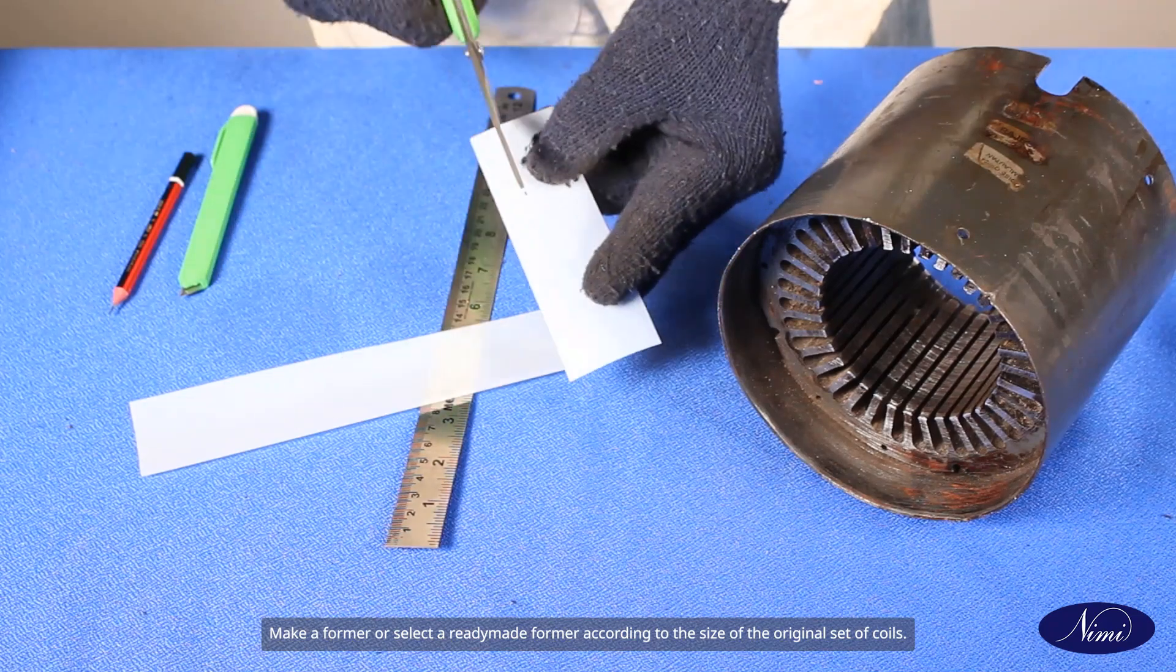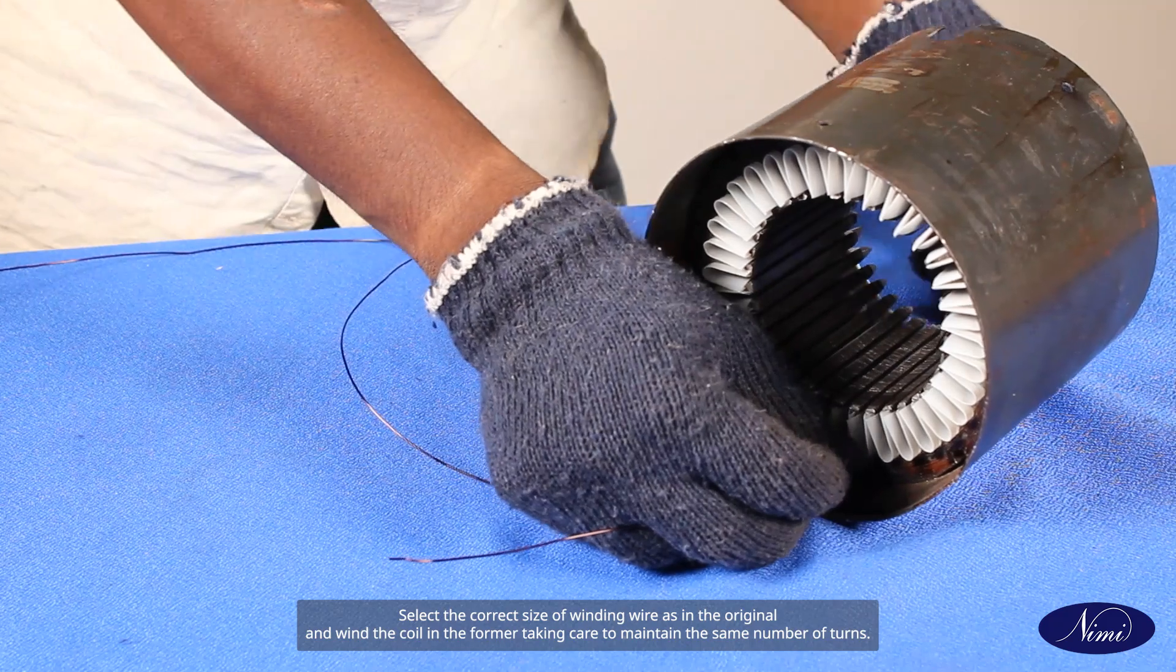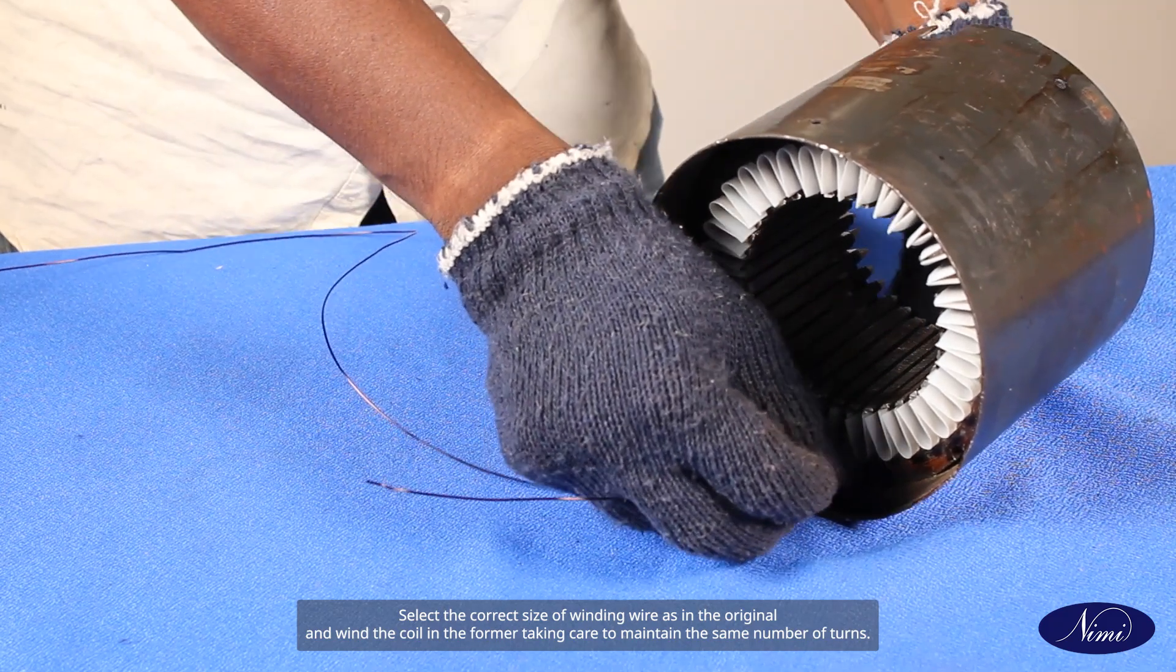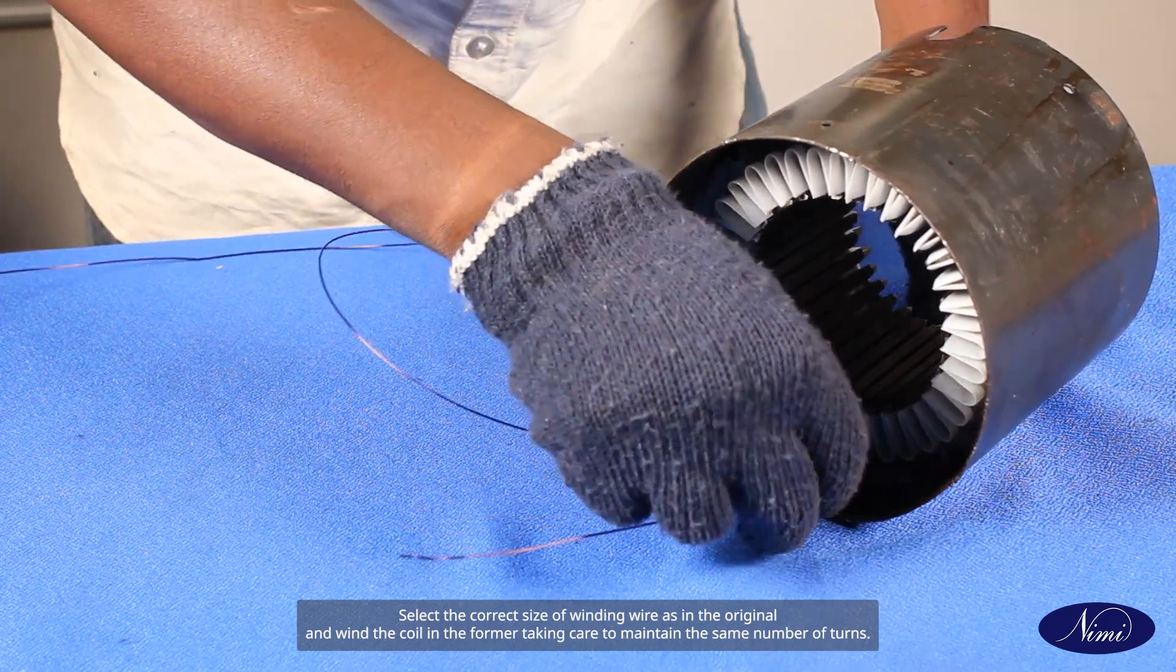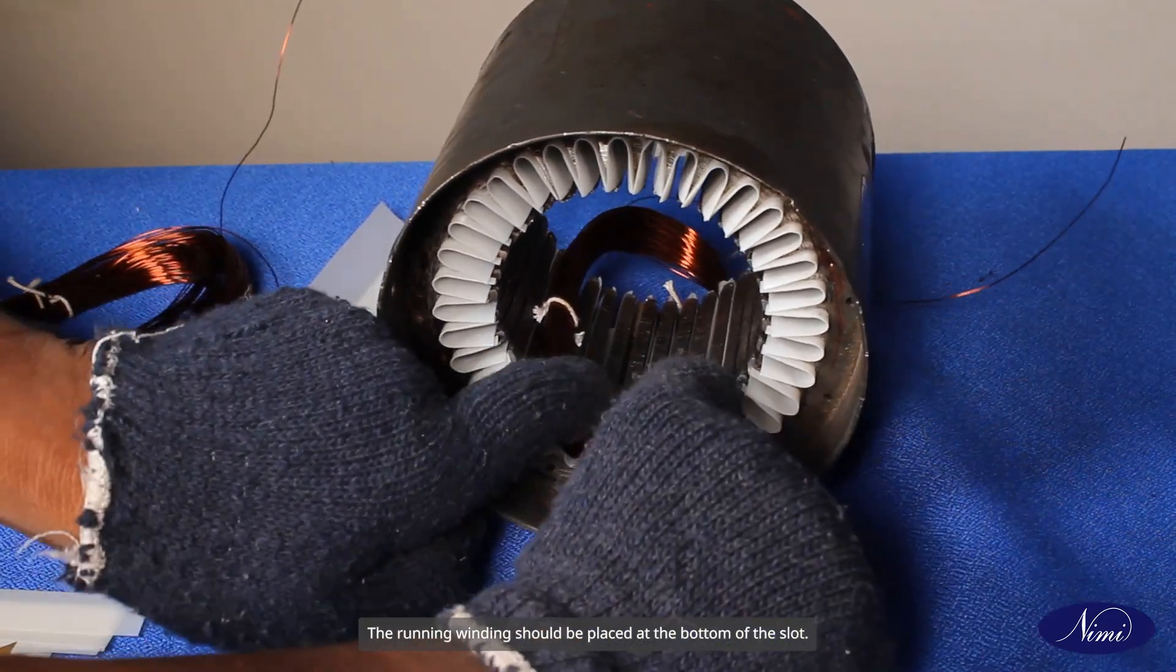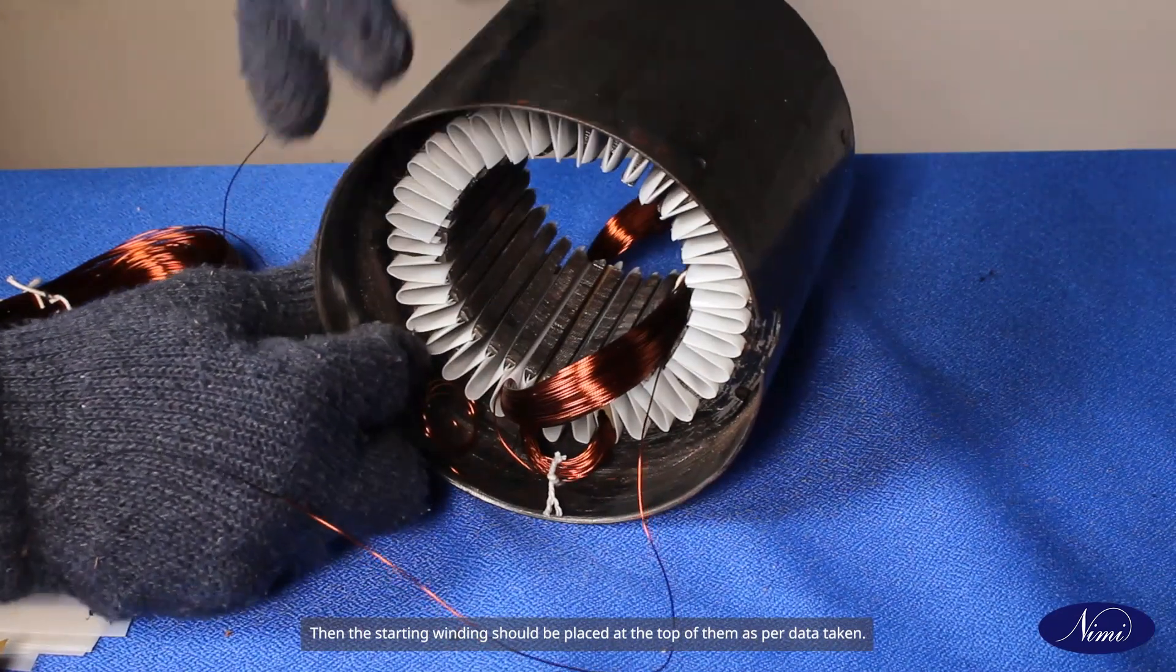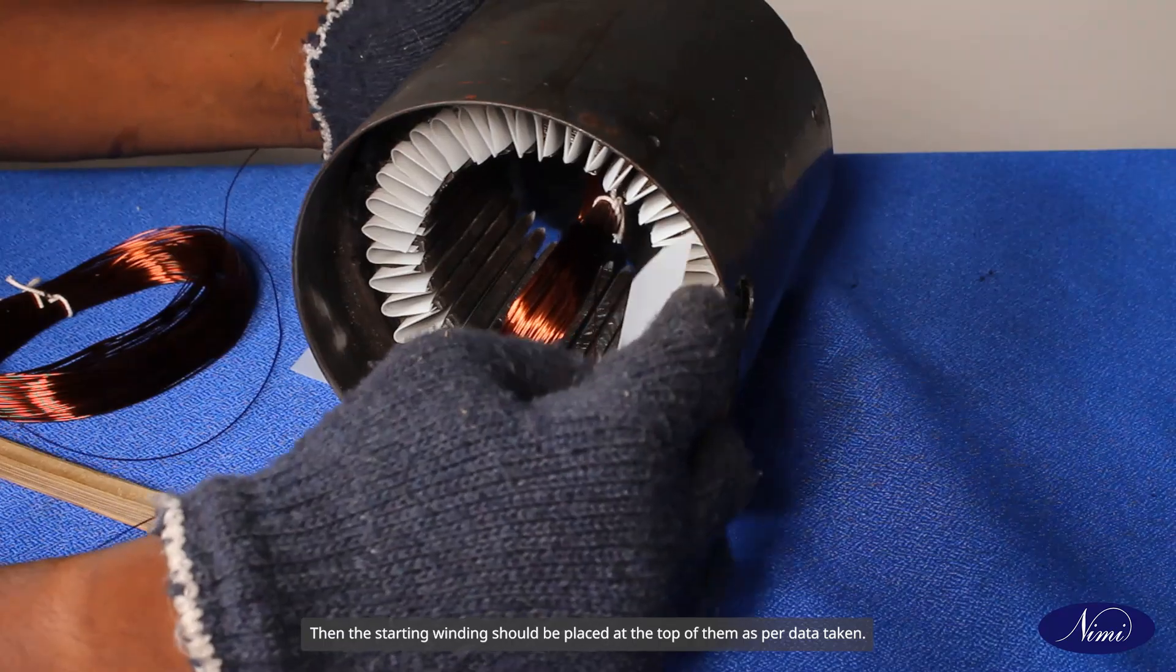Make a former or select a ready-made former according to the size of the original set of coils. Select the correct size of winding wire as in the original and wind the coil in the former, taking care to maintain the same number of turns. Make the required number of main and starting winding coils. The running winding should be placed at the bottom of the slot, then the starting winding should be placed at the top of them as per data taken.